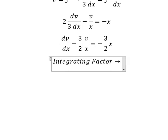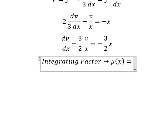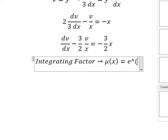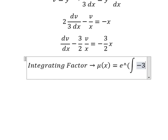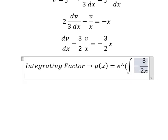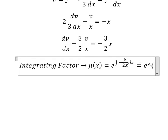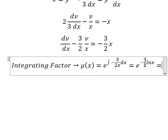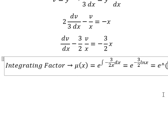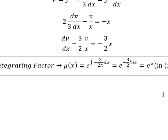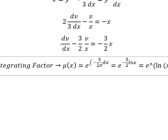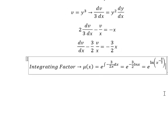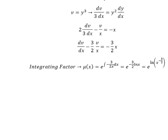We need to find the integrating factor μ(x), which equals e to the power of the integral of negative 3 over 2 with respect to x. That gives us negative 3 over 2 times x. Placing this inside the natural log, we then have x to the power of negative 3 over 2.